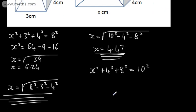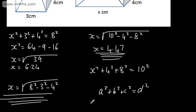All we're ever using to find the diagonal is A squared plus B squared plus C squared equals D squared. These are the dimensions of the cuboid - A, B, and C - and that gives us the value of the diagonal D.